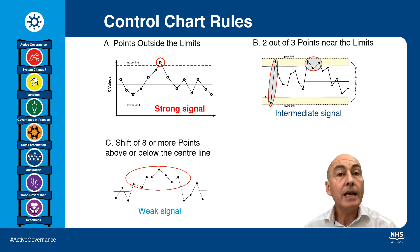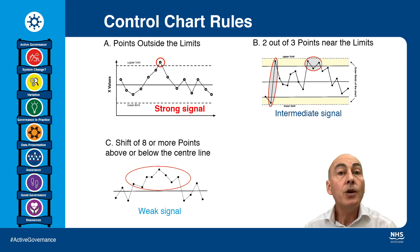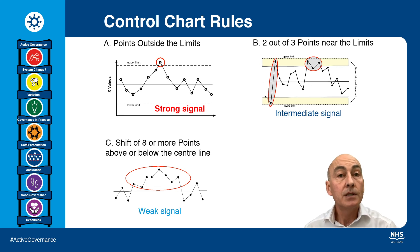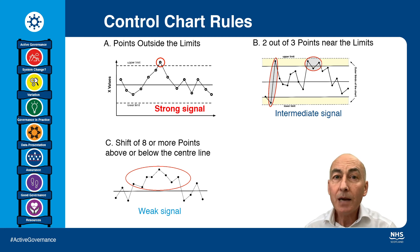So if you stick to just Rule 1 — Points Outside the Limits — it's easy to spot, and you can be sure that it's a strong signal and therefore worth reacting to, sending somebody to find out what's happened, because this is definitely a signal.